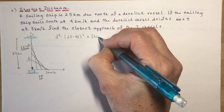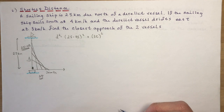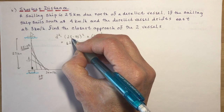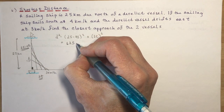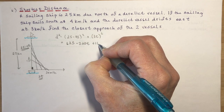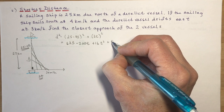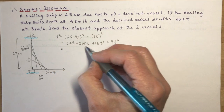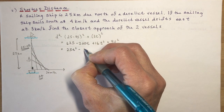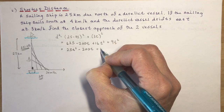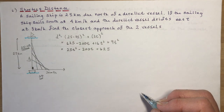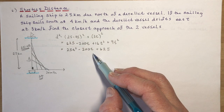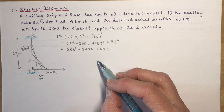Expanding this expression: 25 squared is 625, twice the product gives minus 200t, plus 16t squared, and 3t squared is 9t squared. Writing in descending order, d squared equals 25t squared minus 200t plus 625. So now I have a formula for the distance squared between the two ships at any time t. To find the closest approach, I want to take the derivative.